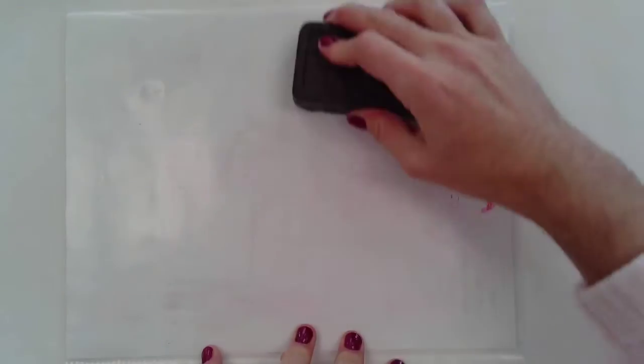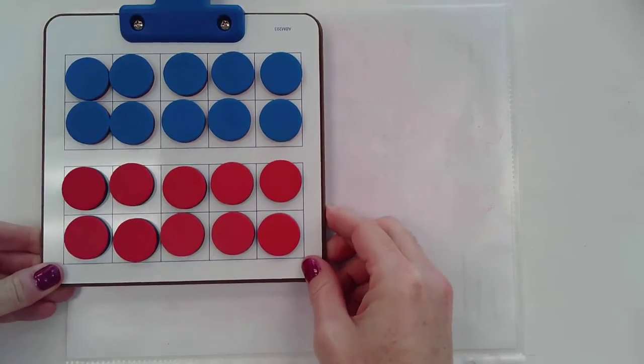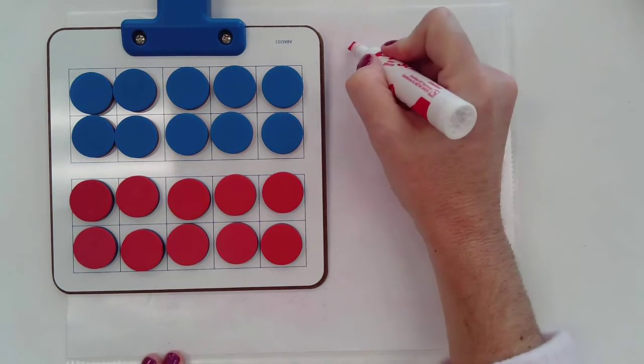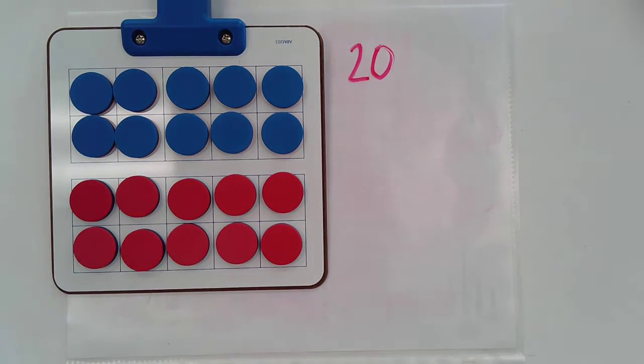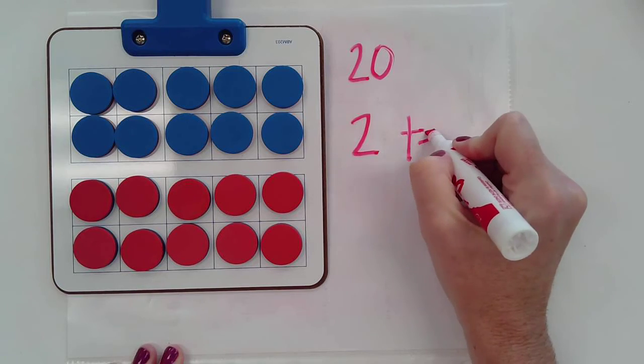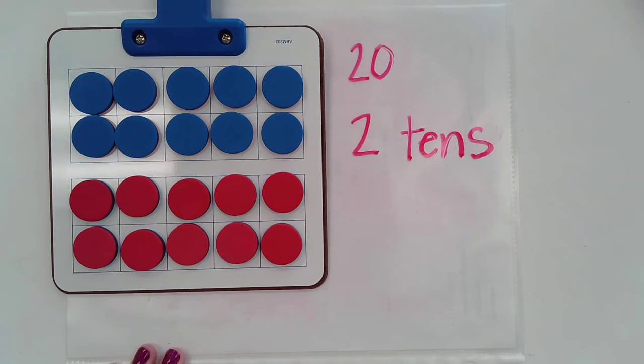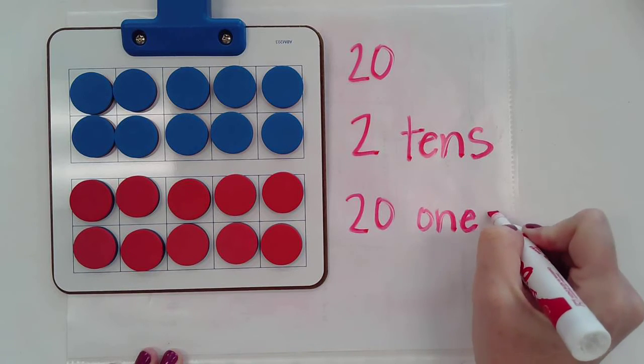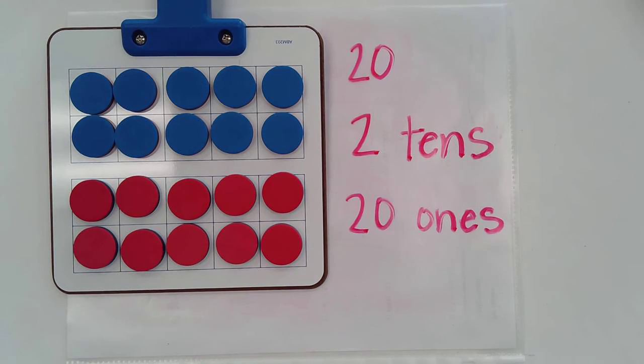Let's try another number. So we're going back to our ten frames here. And so I see my ten frames. I have one ten frame, I have two ten frames. So I know I have the number twenty. I have twenty counters. So I have two sets of ten, two tens, and then I know I have twenty ones or twenty counters.